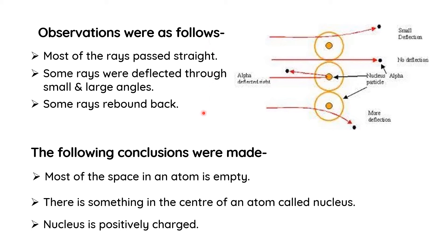The following conclusions were made. Most of the space in an atom is empty — that is why alpha particles, which are positively charged, have no deviation and pass straight. In an atom many parts are empty with no charged particles, so these positively charged alpha particles can move very freely through the atom. That is why most of the rays passed straight.